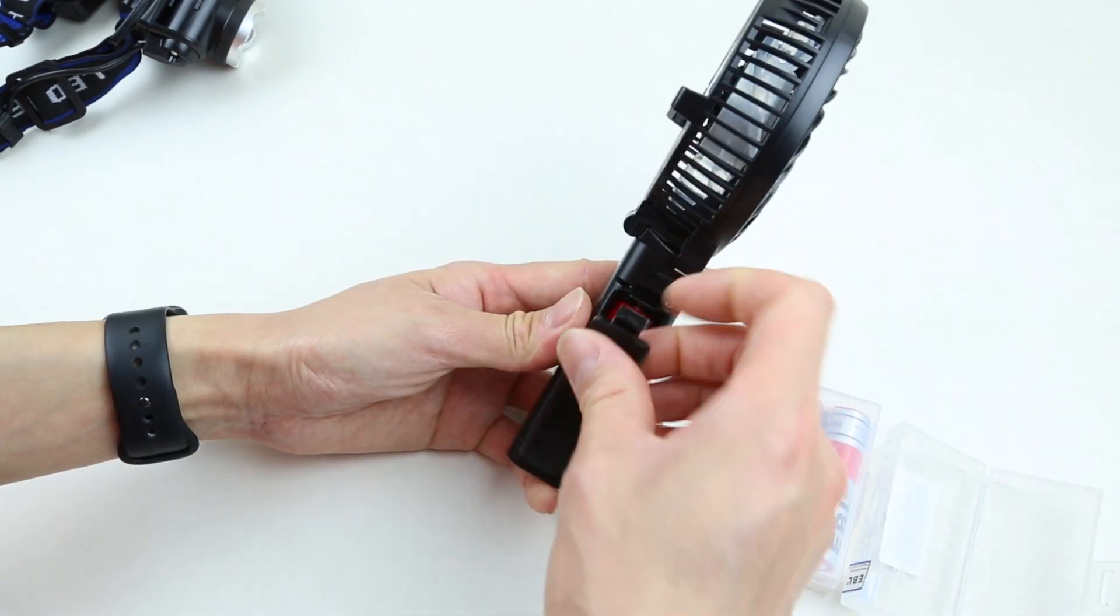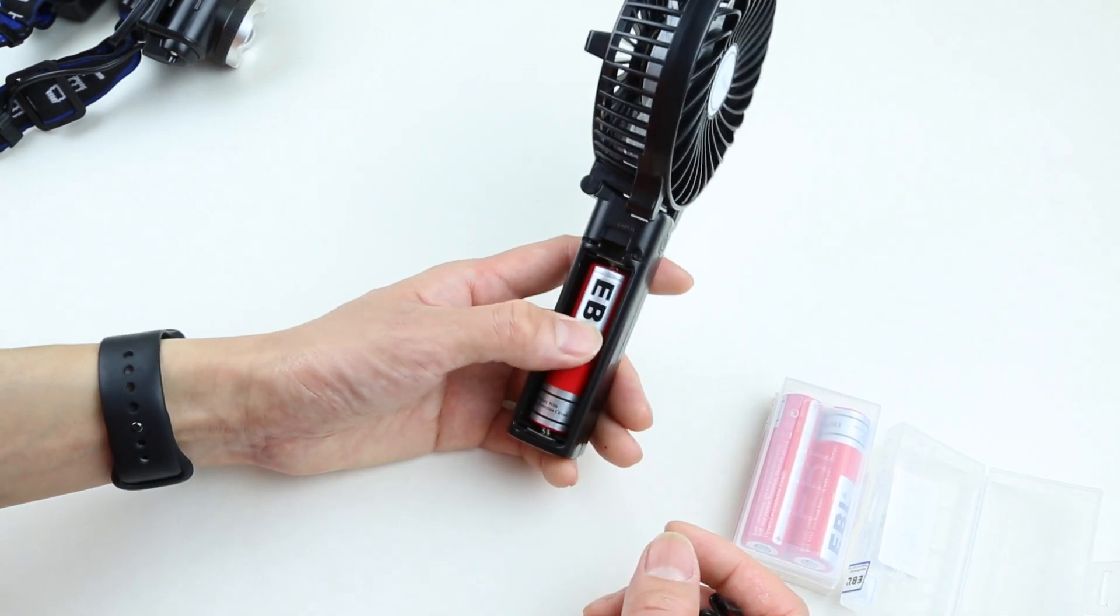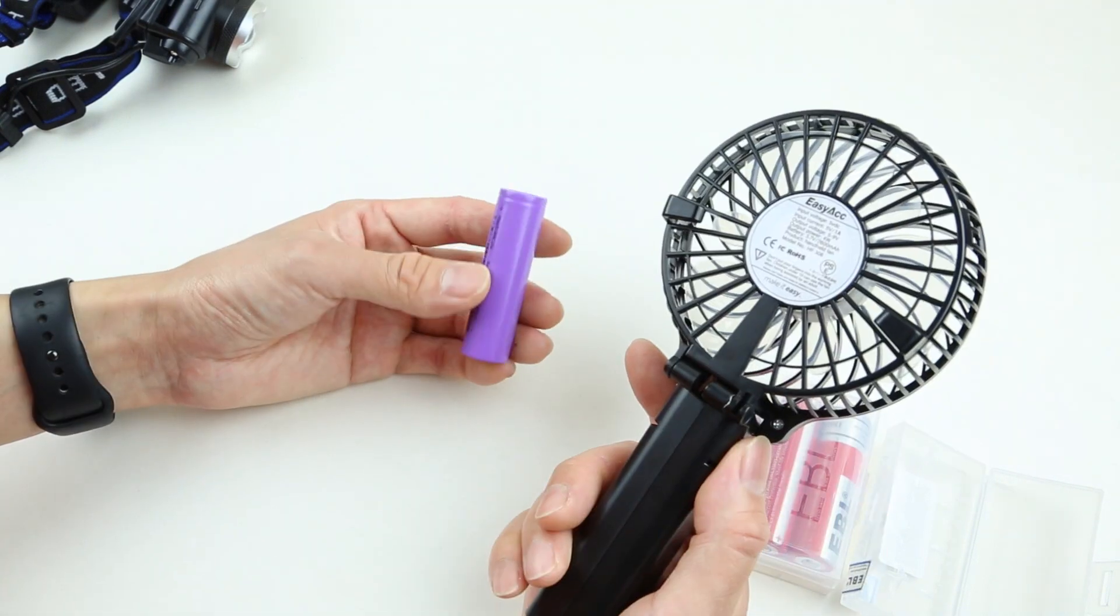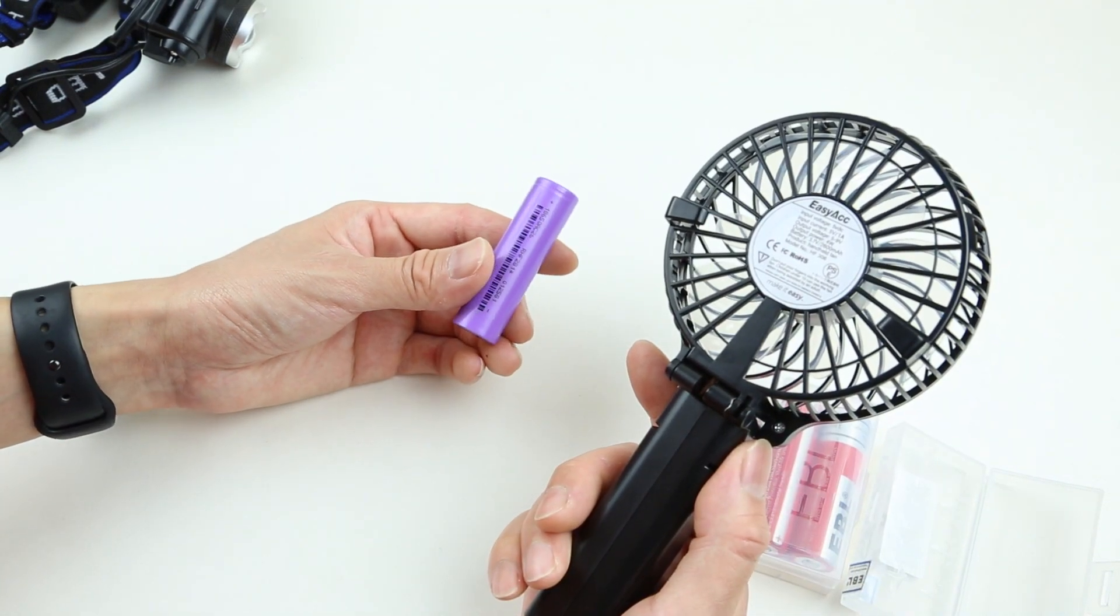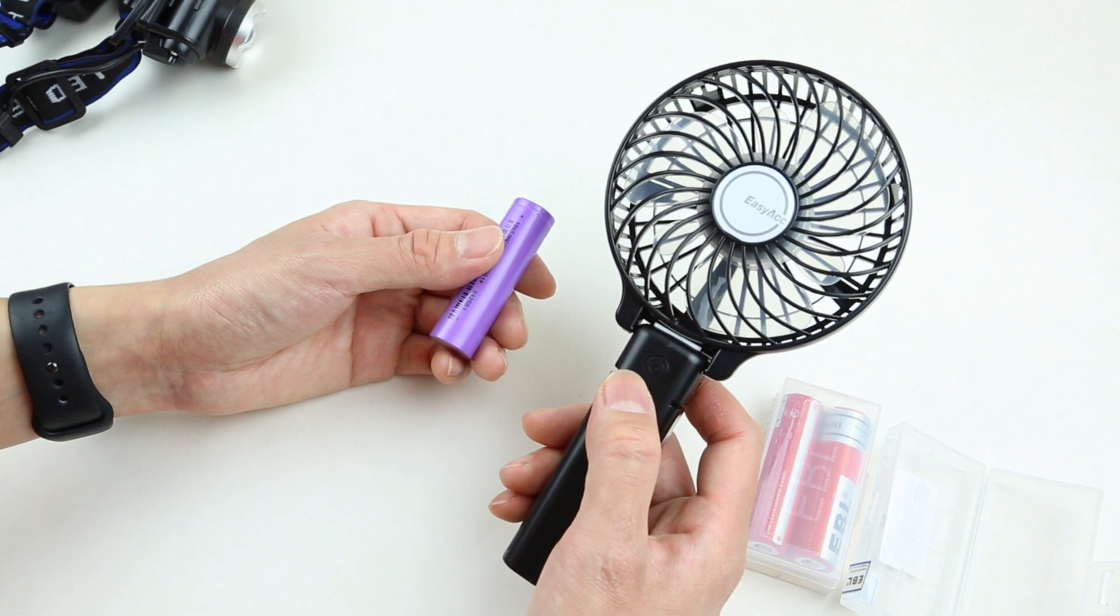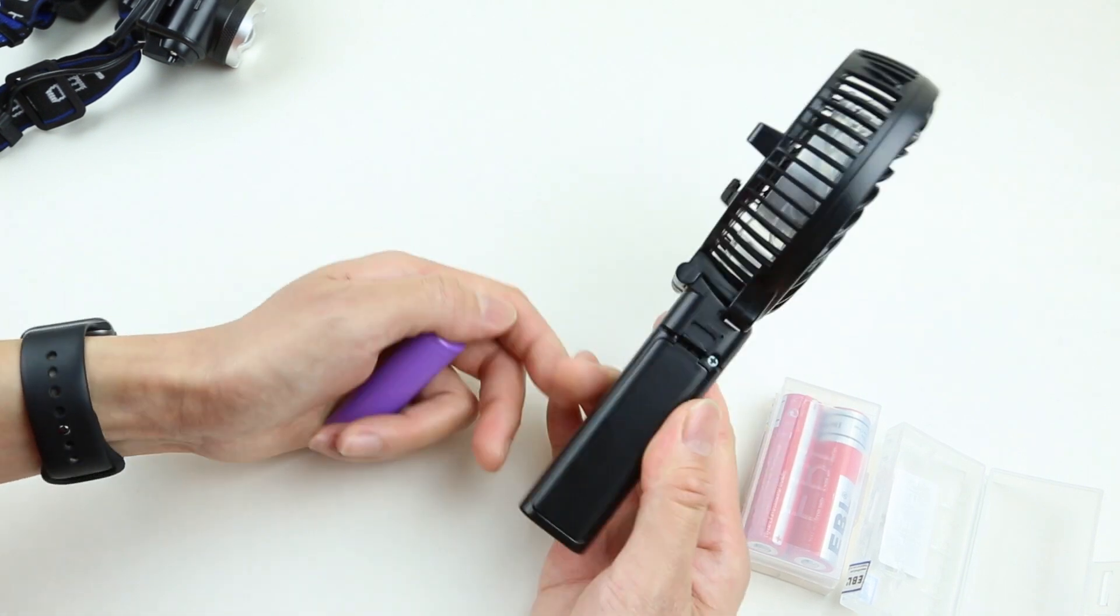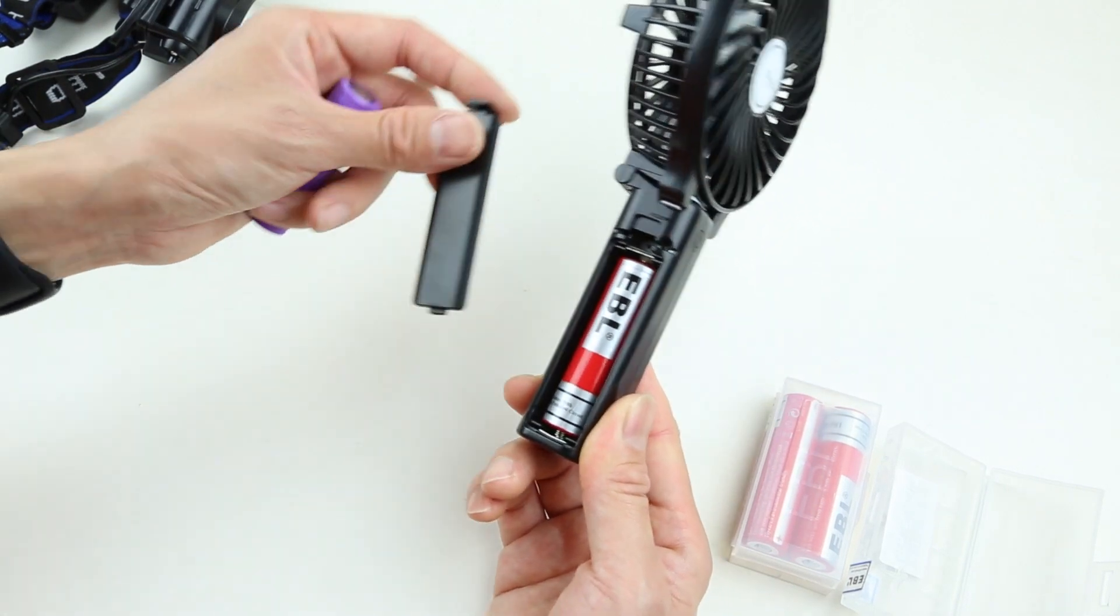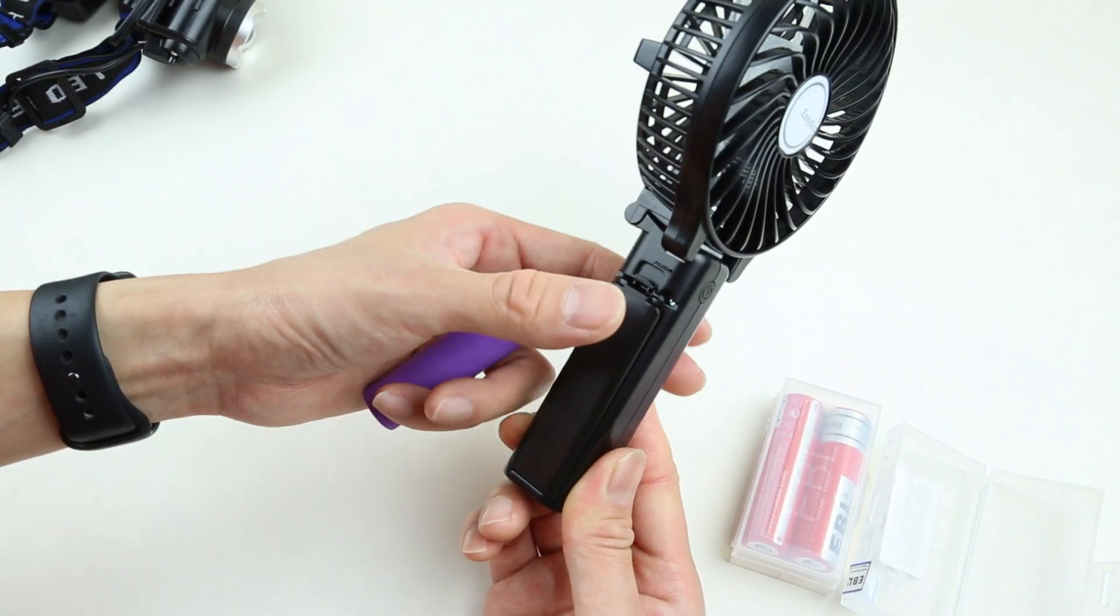Since these batteries are at 3.8V right now, I'm going to charge to 4.2V at 100%, and I'm going to do a test with this fan. Using the stock battery, which is rated at 2600 mAh, this fan should run on the highest speed for three hours. And let's see how many hours we can squeeze out of the EBL battery. So I'll go ahead and charge the battery and start the test. I'll see you guys in a little bit.